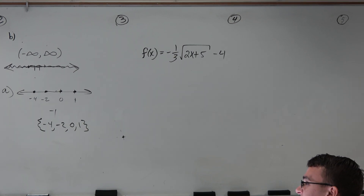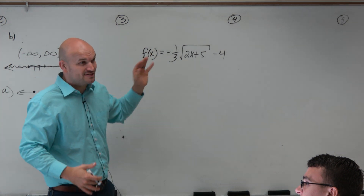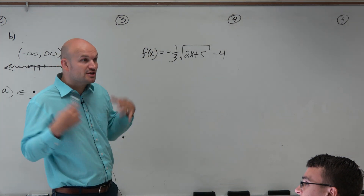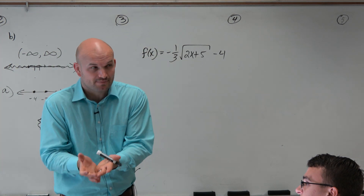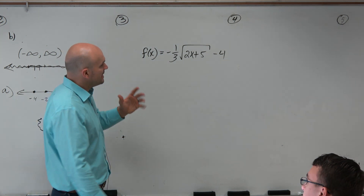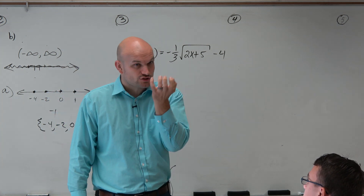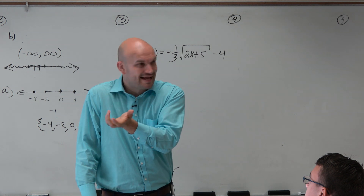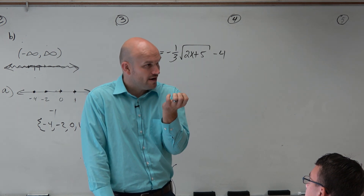Let's go and find the domain of this f of x. The main thing is when we're taking the square root of an expression — or really any even root, like a fourth root or sixth root — you cannot take the square root of a negative number.